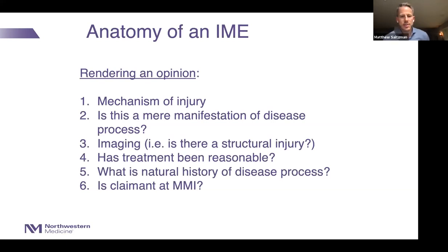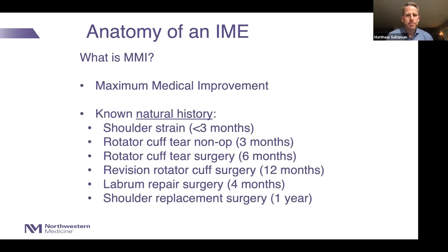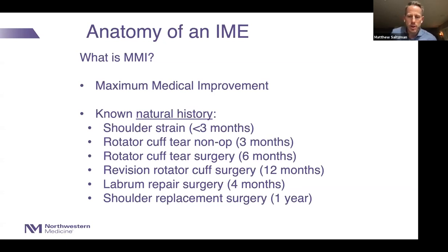Maximum medical improvement means any further treatment is unlikely to help that person get further along — they've maxed out their treatment and this is as good as it's going to get. To render an opinion on MMI, you need to understand the natural history of shoulder conditions. A shoulder strain should get better in three months or less. A non-operatively treated rotator cuff tear: three months. Rotator cuff repair surgery: MMI around six months, or up to 12 months for revision. Labral repair: four to six months. Shoulder replacement: MMI typically around one year.